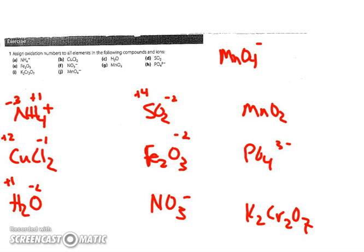SO2, shown with no charge, so oxygen is going to have priority at minus two for a total minus four, leaving sulfur with a plus four. Fe2O3: oxygen has priority, so I've got a total minus six charge, meaning my two iron will each have to be a plus three.